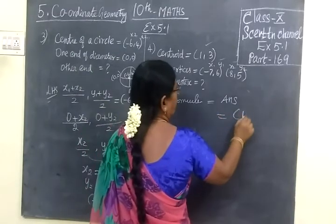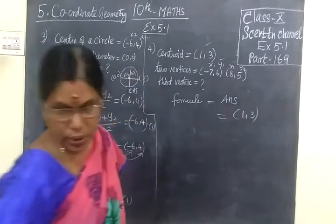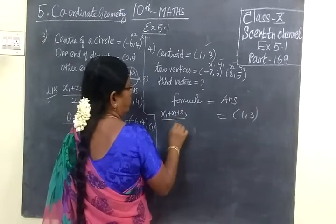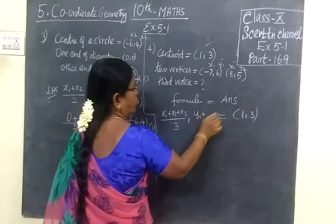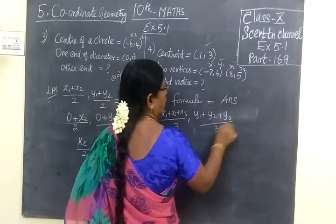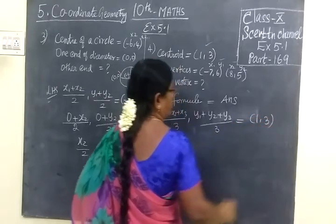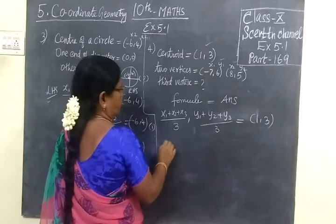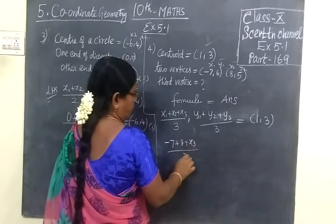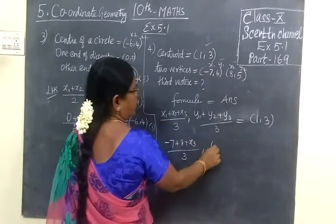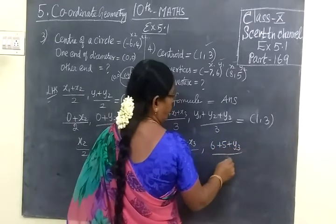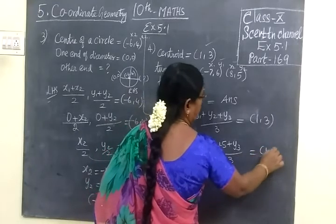Answer equals (1,3). This formula is x1 plus x2 plus x3 by 3, centroid formula. Then y1 plus y2 plus y3 by 3 equal to (1,3). So x1, y1: (-7,6), x2, y2: (8,5), x3 you don't know, y3 by 3 equal to (1,3).